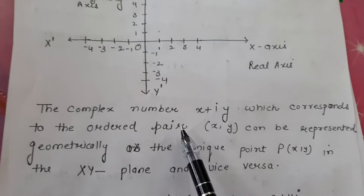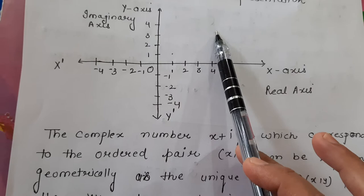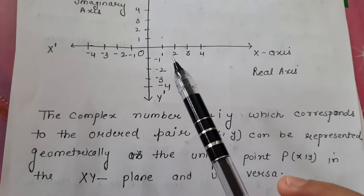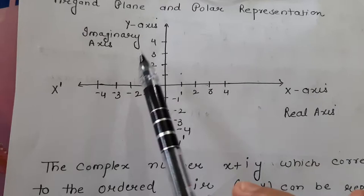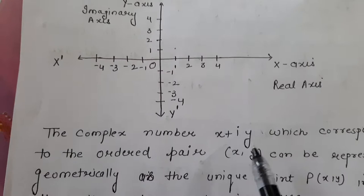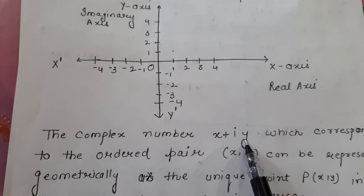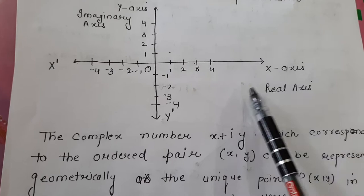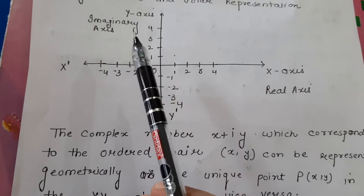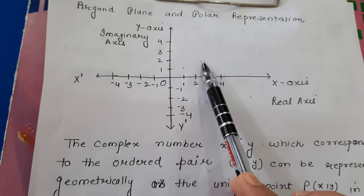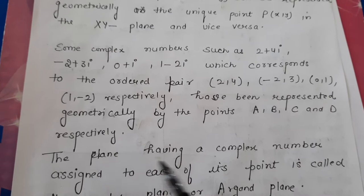Any complex number x plus iota y can be represented in this plane in the form of an ordered pair — that is the geometrical meaning of the geometrical representation of any complex number. Along the x-axis I have written 'real axis' and along the y-axis 'imaginary axis'. The real part x is represented along the x-axis and the imaginary part y along the y-axis. This plane is known as the Argand plane.